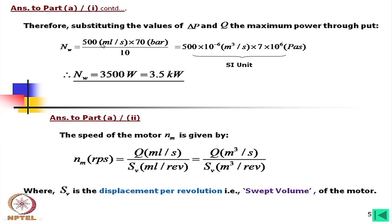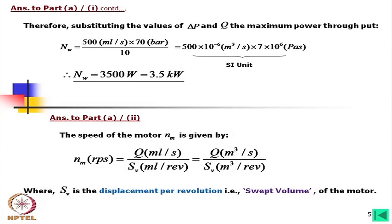Substituting values: maximum power = 500 milliliters per second × 70 bar ÷ 10 = 3500 watts = 3.5 kilowatts. In SI units: 500 × 10⁻⁶ cubic meters per second × 7 × 10⁶ Pascals (since 70 bar = 7 megapascals, and 10 bar = 1 megapascal) = 3500 watts = 3.5 kilowatts.